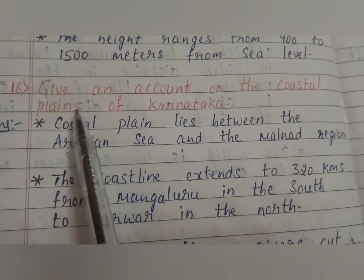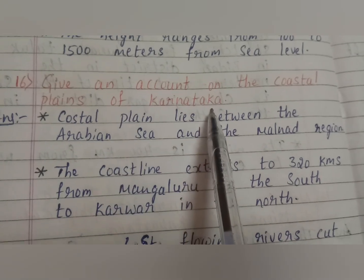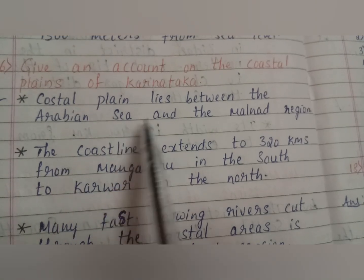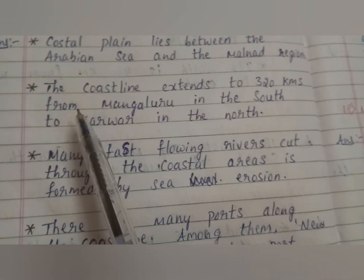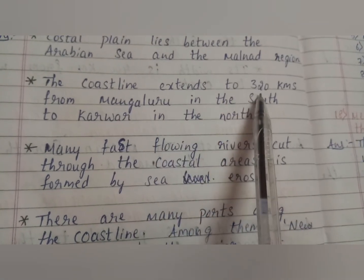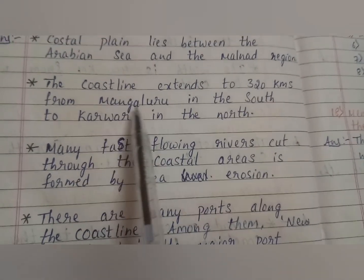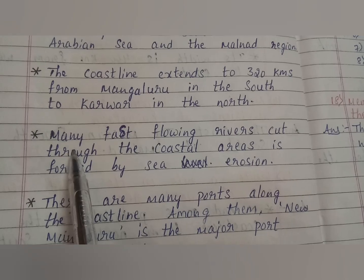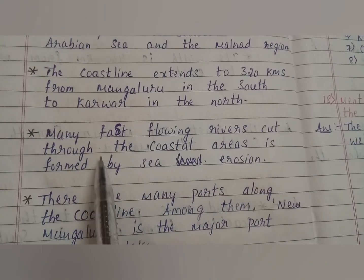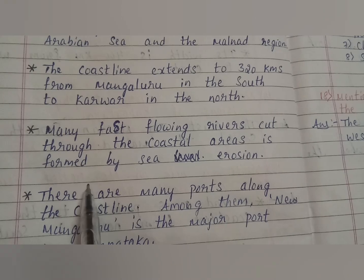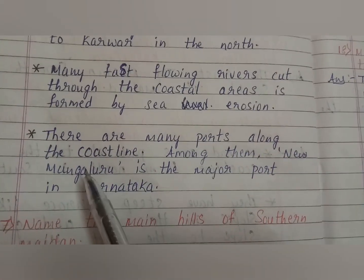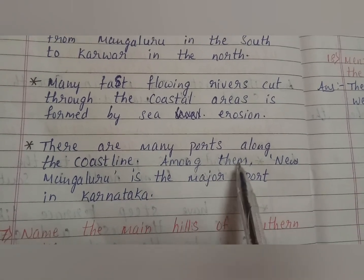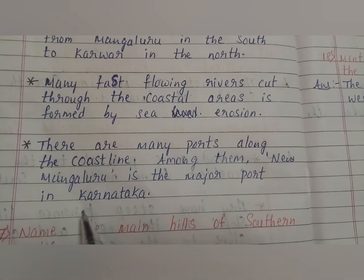Next question: give an account on the coastal plains of Karnataka. Answer: coastal plain lies between the Arabian Sea and the Malnadu region. The coastline extends to 320 km from Mangaluru in the south to Karwar in the north. Many fast-flowing rivers cut through the coastal areas, formed by sea erosion. There are many ports along the coastline; among them, New Mangaluru is the major port in Karnataka.